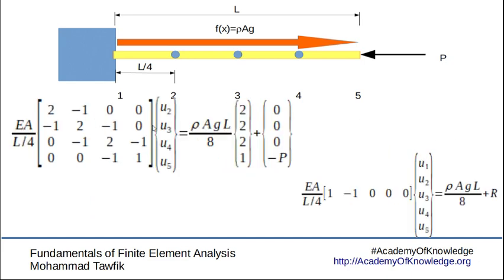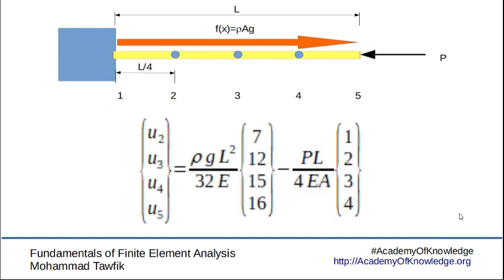Here you get this primary equation and the auxiliary or secondary equation. If you solve this, you will get u2, u3, u4, u5 in this form.